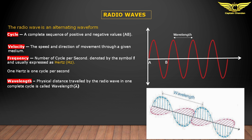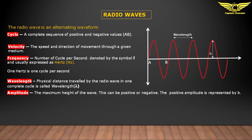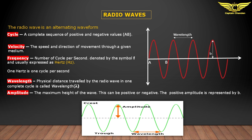Example: one hertz is one cycle per second, meaning in one second only one cycle passes. Wavelength: the physical distance traveled by the radio wave in one complete cycle — you can see this in the diagram. Amplitude: the maximum height of a wave, which can be positive or negative. The positive amplitude is represented by P. The positive wave is called a crest and the negative is called a trough.